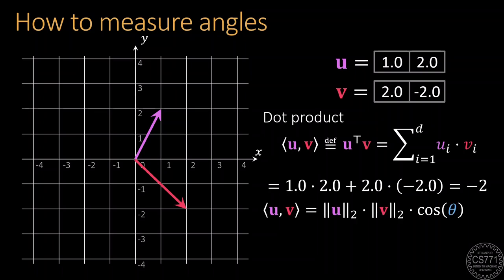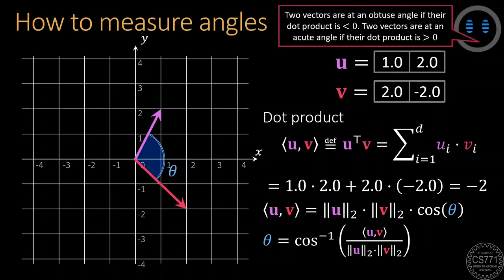However, the magical bit is that this weird looking number, the dot product, is somehow related to the angle between the two vectors. The dot product between two vectors is nothing but the Euclidean lengths of those two vectors multiplied together with the cosine of the angle between them. Since the lengths of a vector are never negative, this means that if two vectors are at an obtuse angle, then their dot product will be less than zero because the cosine of obtuse angles is less than zero. Similarly, if two vectors are at an acute angle, their dot product will be greater than zero because the cosine of acute angles is greater than zero.